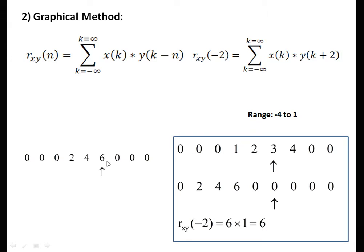We move the arrow to the right by two units. The resulting signal on the left becomes {0, 0, 6, 4, 2}. We multiply with the corresponding x values — x is fixed with no shifting. Doing element-wise multiplication, the answer is 1 into 6 = 6 because all other values are 0. The range of the signal at this step is minus 4 to 1.